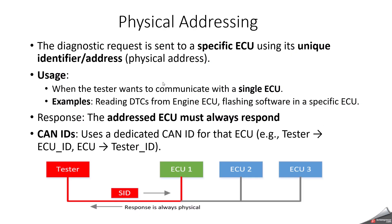What is Physical Addressing? Physical addressing is where the tester talks to a particular ECU — like how one person talks to another person via a WhatsApp chat. The tester is going to talk to a particular ECU using a unique identifier or address, that is called the physical address.